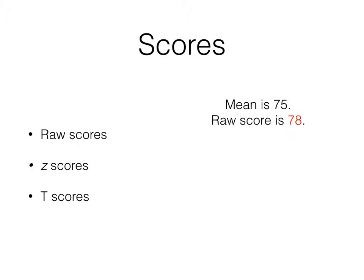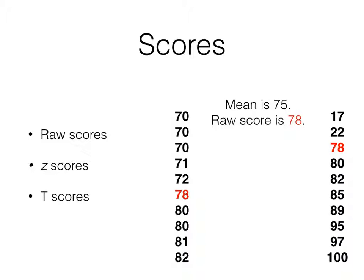If I give a test and the mean is 75 and a person's raw score is 78, that doesn't give you a whole lot of information about that test and the way the scores were distributed. Here's an example of a distribution where the mean is 75 and the raw score is 78 in red. Here's another one. We can't even compare these two data sets because they may not be on the same scale and they obviously don't have the same distribution.